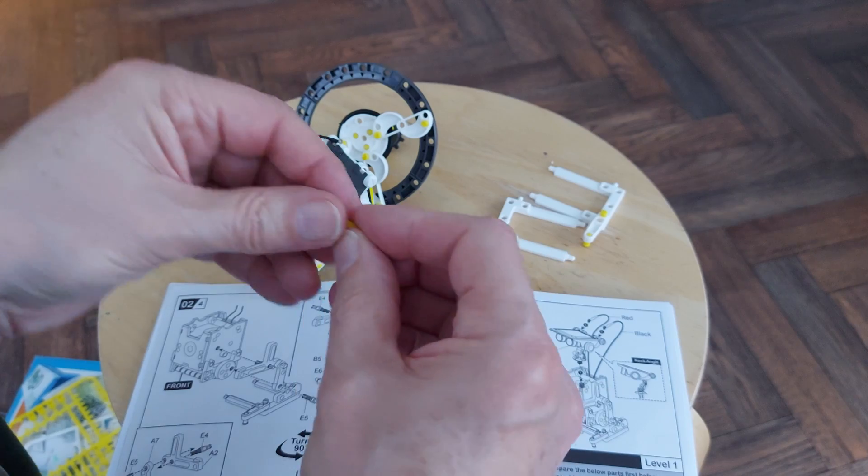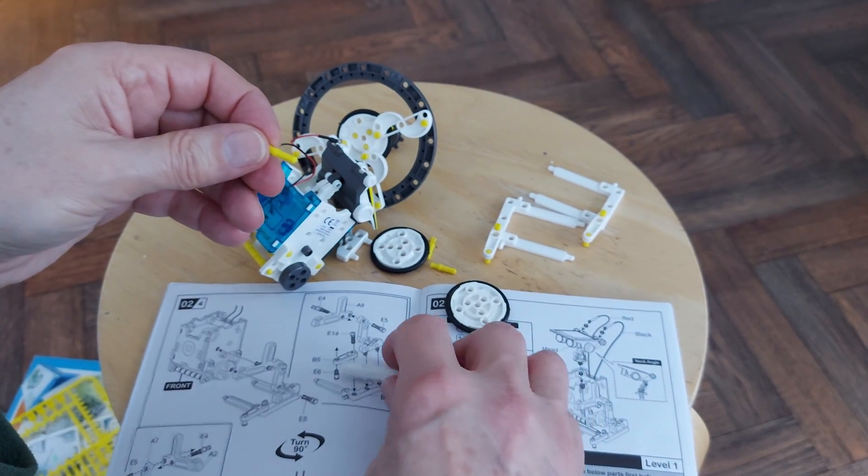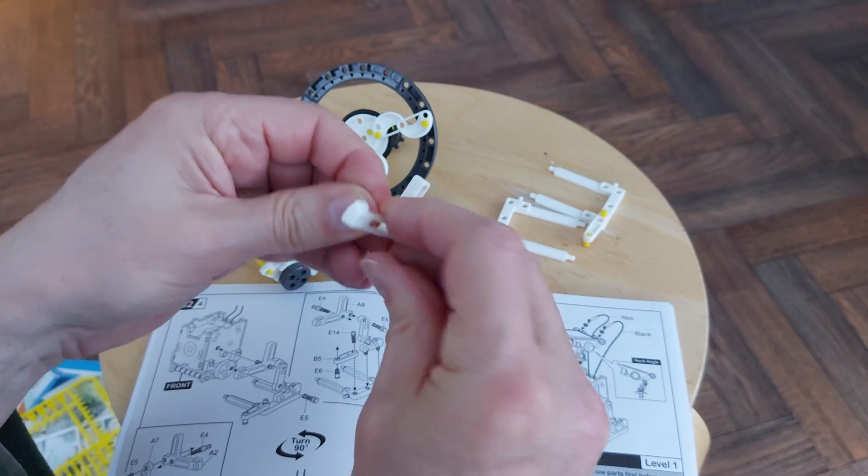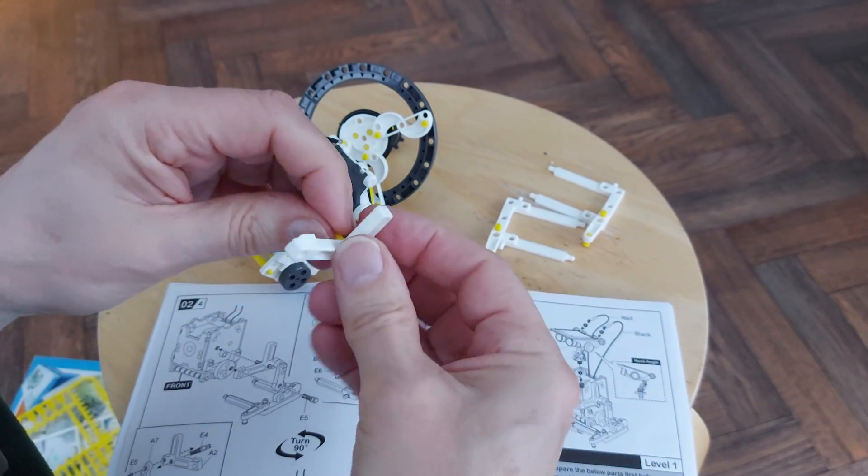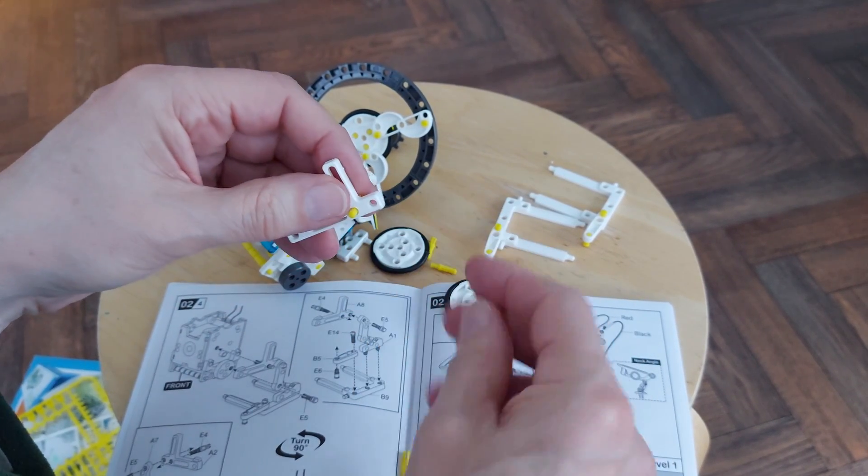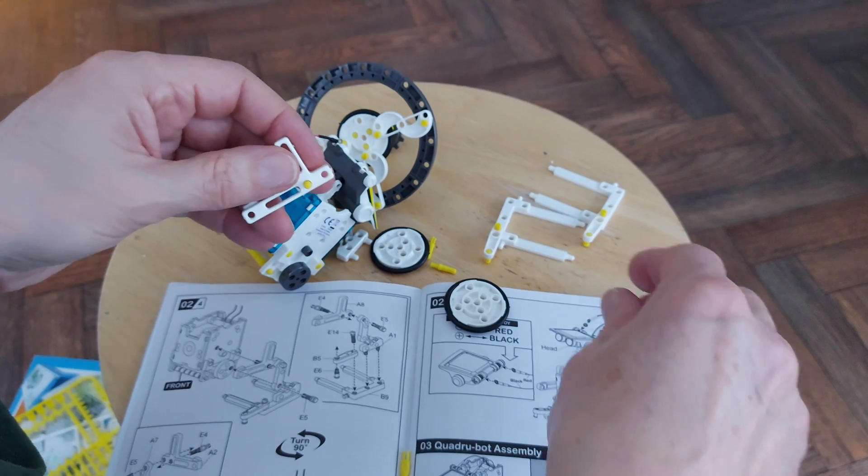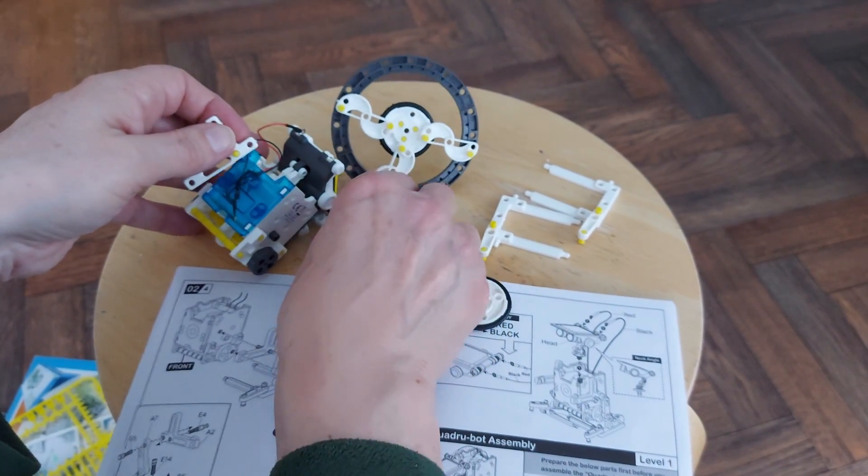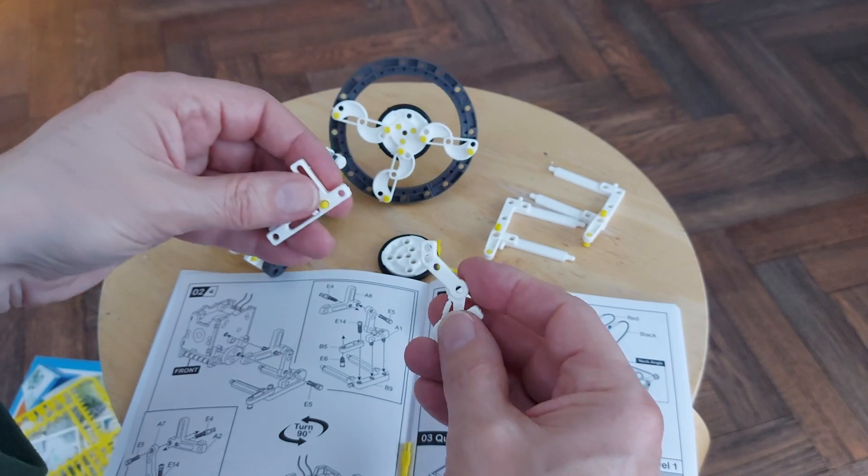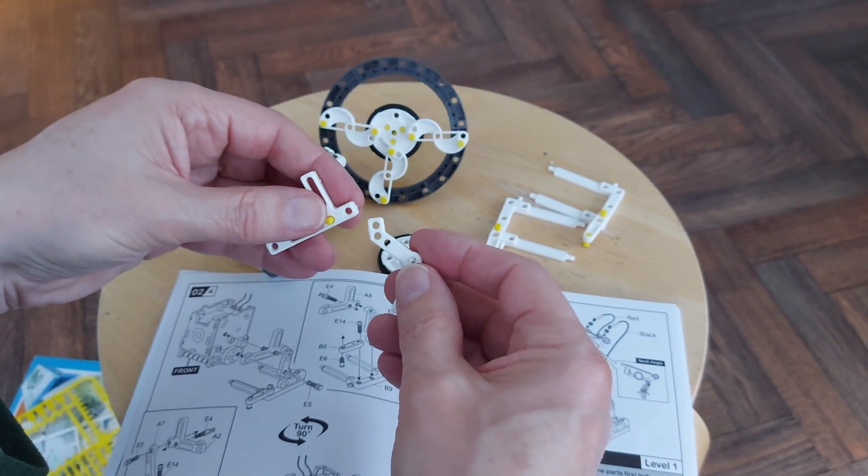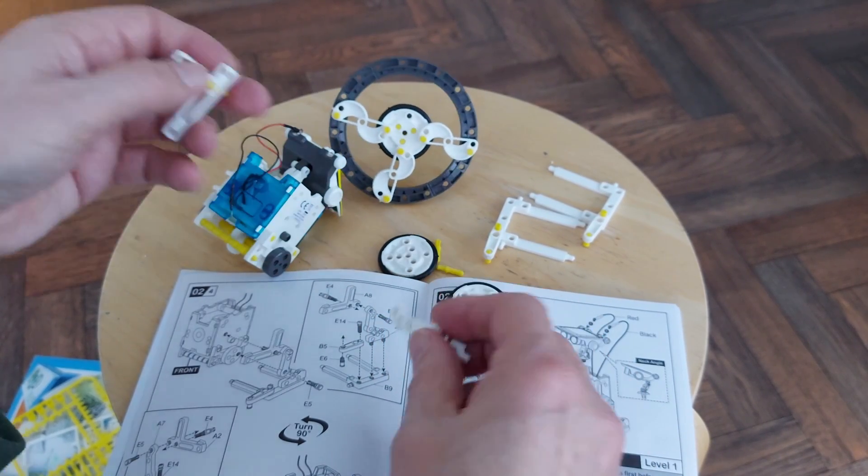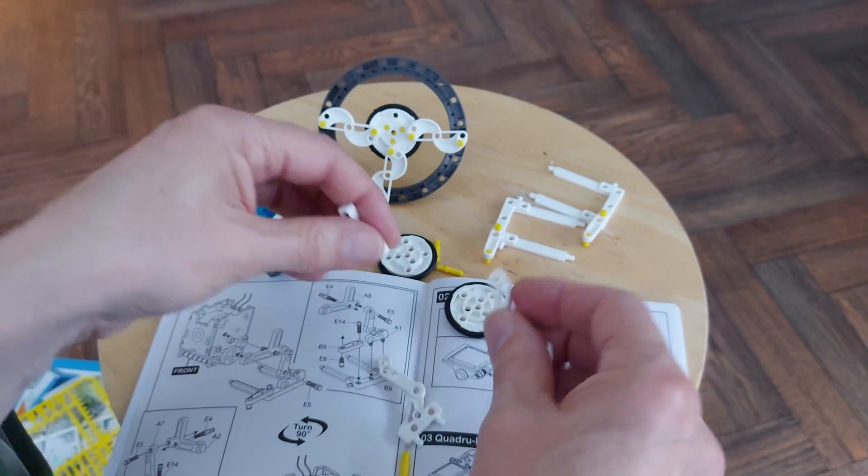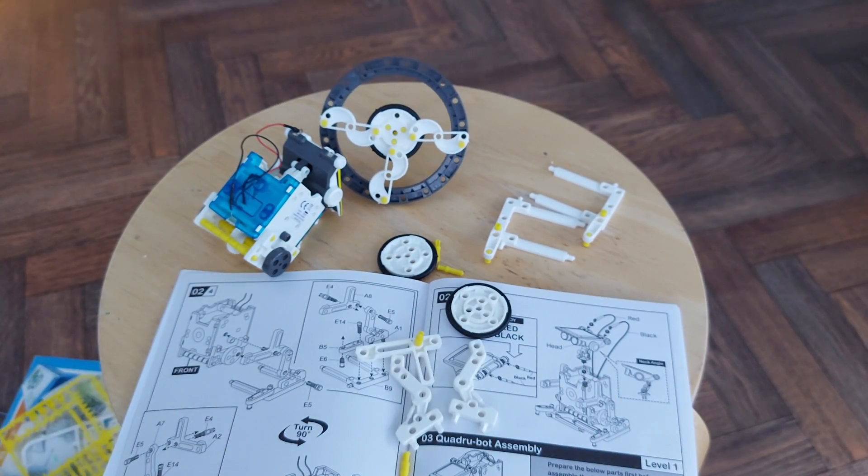All right, E4 is going through that one. All right, we need an E5 to go. All right, one. And E5, what does E5 look like?